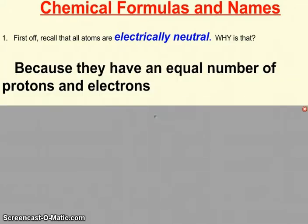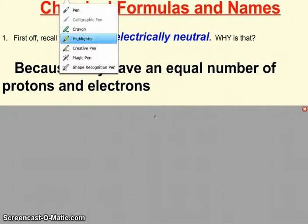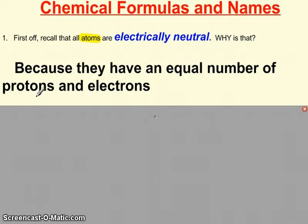All right, so the first part of these notes should be pretty review-y as we start to get into writing proper chemical formulas and naming compounds. First of all, all atoms are electrically neutral. We learned about this back in the atom days. And that's because all atoms have the same number of protons and electrons.